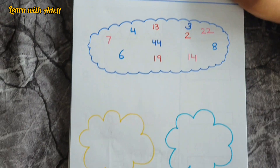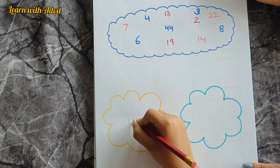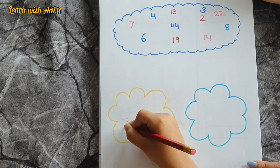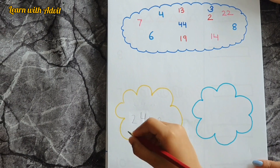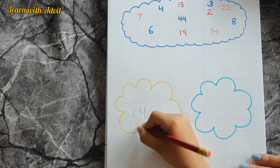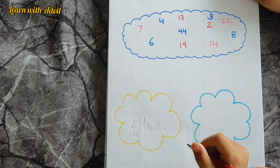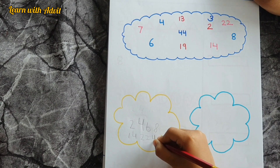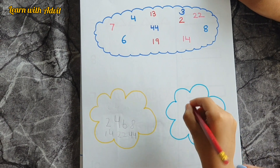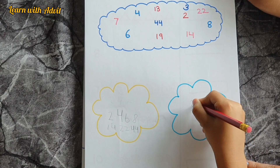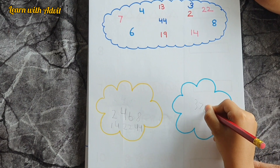Come on, write it down fast. Even numbers: 4, 2, 6, 8, 14, 22, and 44. Very good. Now odd numbers: 3, 7, 13, and 19.